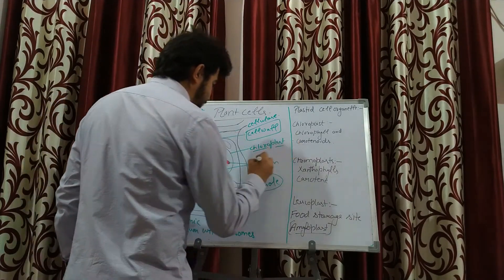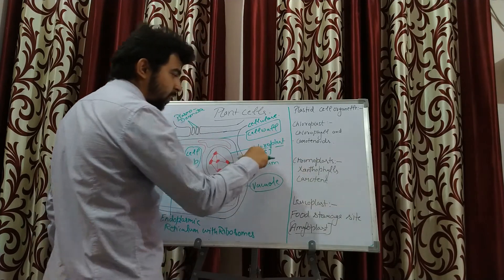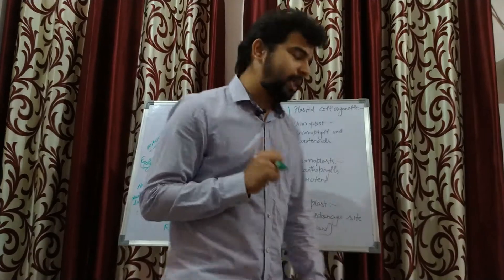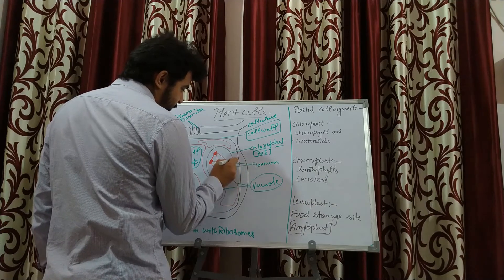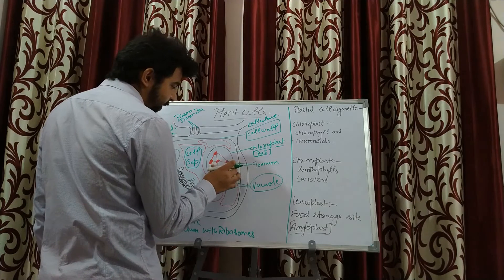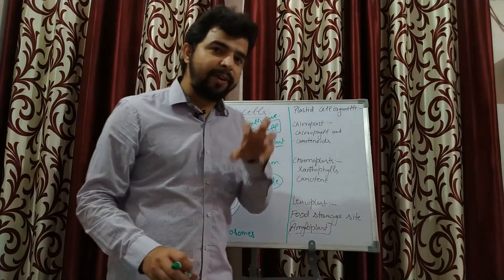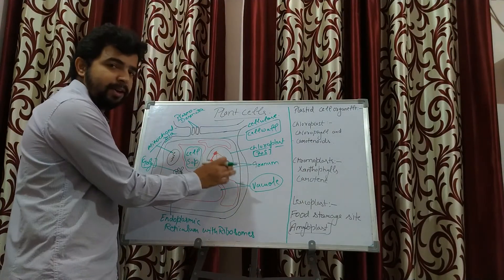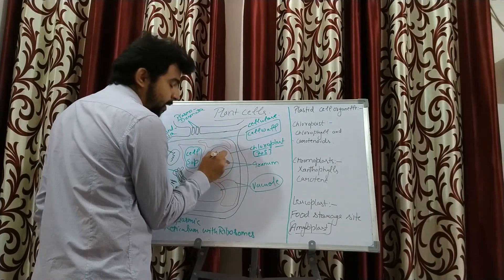Chloroplasts are also present in plant cells, again having 70S ribosomes, similar to mitochondria in animal cells. Within the chloroplast there are structures known as grana (singular: granum), which are filled with chlorophyll pigments. The lines connecting the grana are known as lamella.